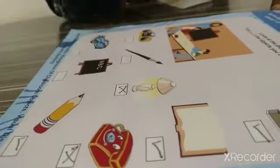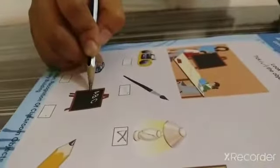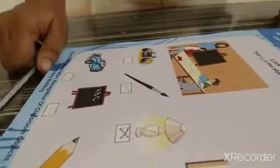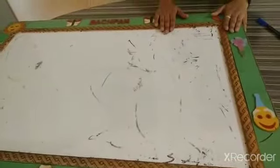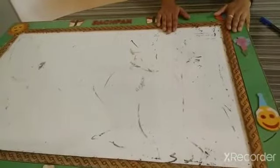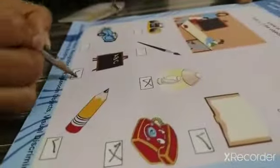So cross here. Next is blackboard. Have you seen a blackboard in school? Yes or no? Yes, we see the board in the classroom. So tick in the box.